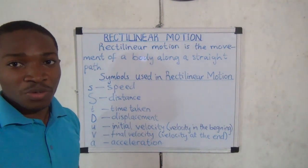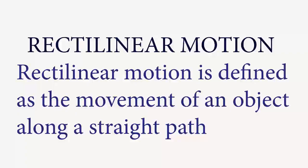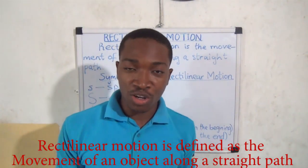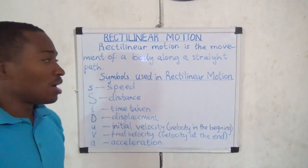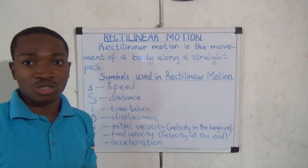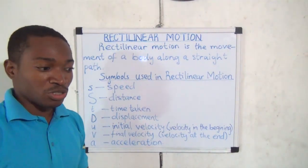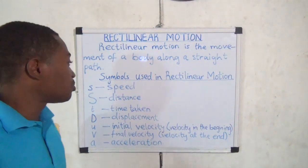Hello, our topic today is Rectilinear Motion. Rectilinear motion is defined as the movement of an object along a straight path. These symbols are used to describe rectilinear motion and to solve simple problems concerning rectilinear motion.